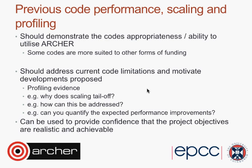You should demonstrate the code's appropriateness and ability to utilise Archer. Some codes are regarded as more suitable to other forms of funding — a classic example is EPSRC's University ECSEs, which are targeted at codes more appropriate for university-level systems rather than the national service. So when applying for an Archer ECSE, you need to make the case that the code can utilise Archer and actually run on this size of system. In addition to scaling curves and performance information, you want to provide evidence of why the code scaling is poor — do you understand the performance issue, and is it going to be addressed by the work in your proposal?